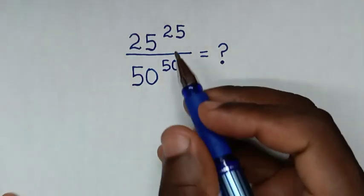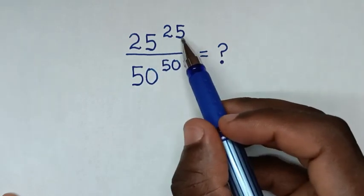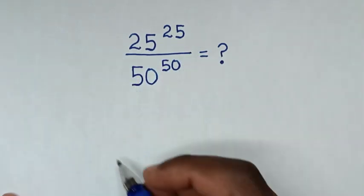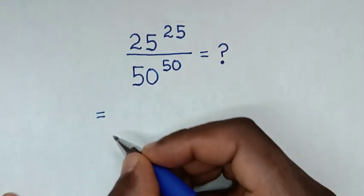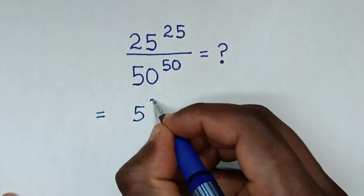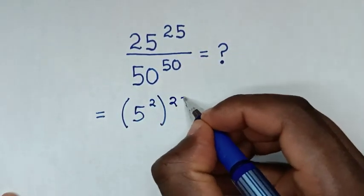Hello, you're welcome. Let's solve this math problem which is 25 to the power of 25 over 50 to the power of 50. It will be equal to, from this base of 25 is the same as 5 squared, then bracket power of 25.